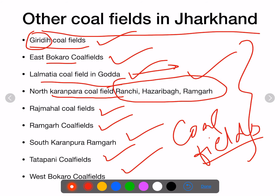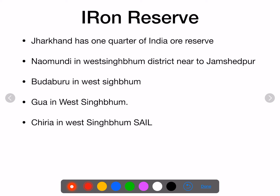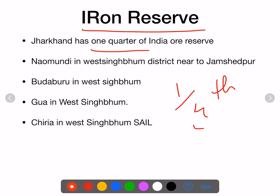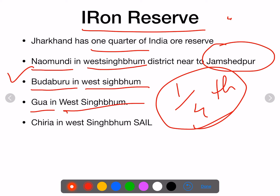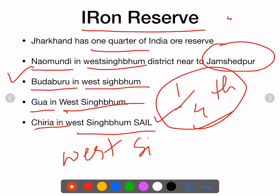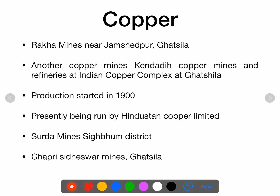Jharkhand has one quarter — one fourth — of the iron reserve of all India. The most important iron reserve in Jharkhand is in Noamundi, which is in West Singhbhum district, about 40-45 kilometers from Jamshedpur. Other iron reserves are at Budha Buru, Guva, and Chiriya — all in West Singhbhum — and managed by SAIL. The iron reserve in Jharkhand is mostly concentrated in West Singhbhum district.